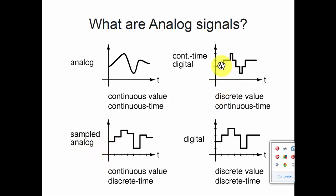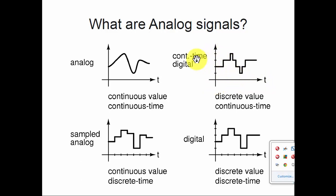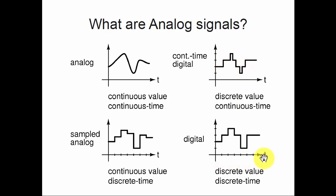You can also have the counterpart where the signal varies at any instant of time. This is shown on the top right, labeled as continuous time digital. The signal can vary at any instant, so the x-axis is continuous, but it can only take on certain discrete values along the y-axis. This is a continuous time digital signal — not very often seen, but very much possible. Finally, you could have discretization along both x and y axes: the signal changes only at discrete instances of time and takes on only discrete values. This is known as a discrete time discrete valued signal, or more commonly, a digital signal.